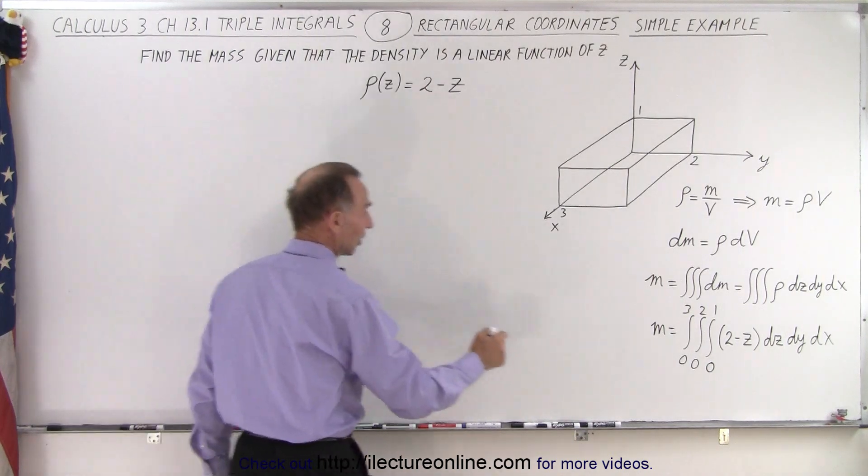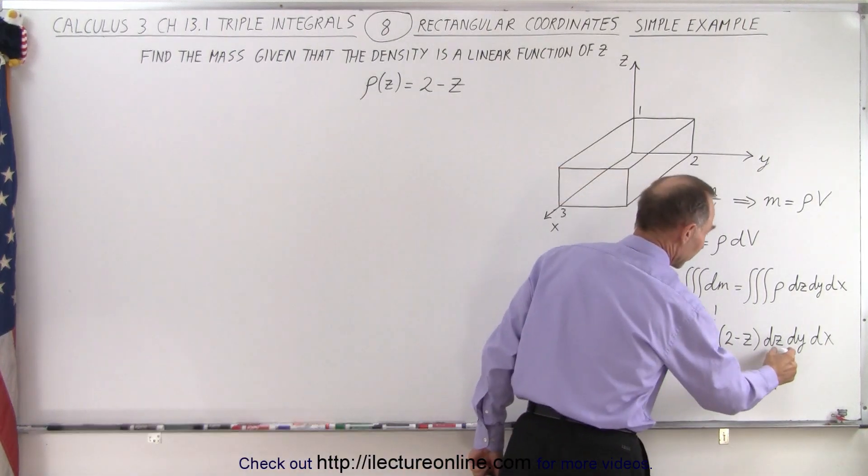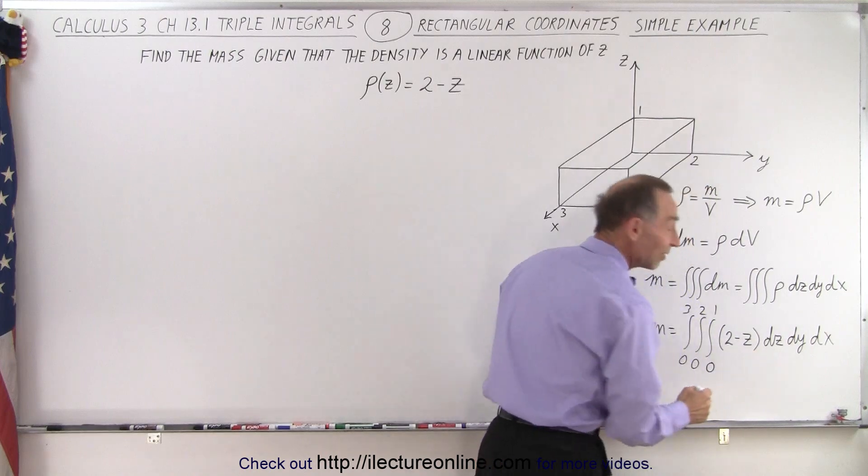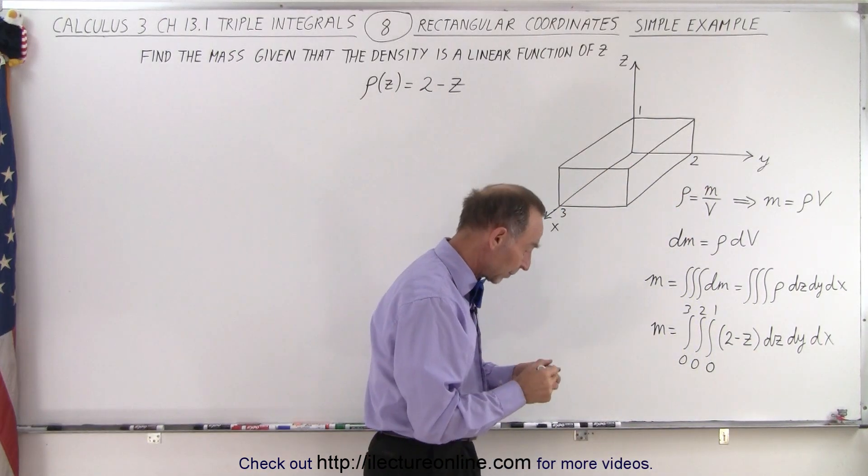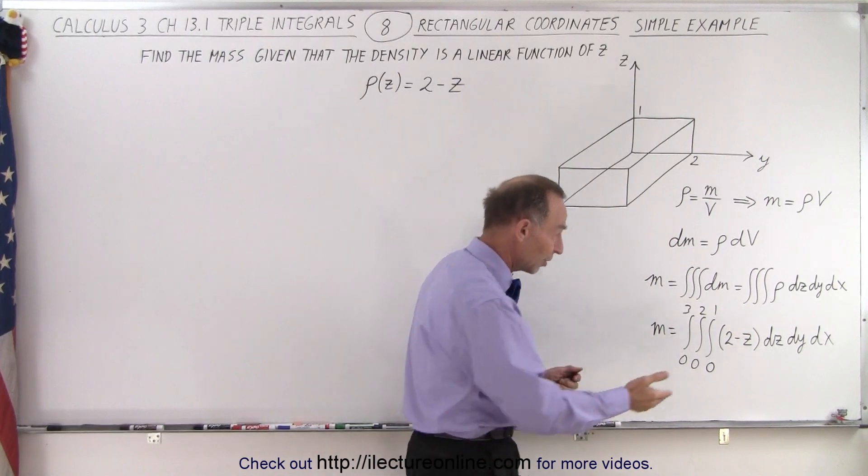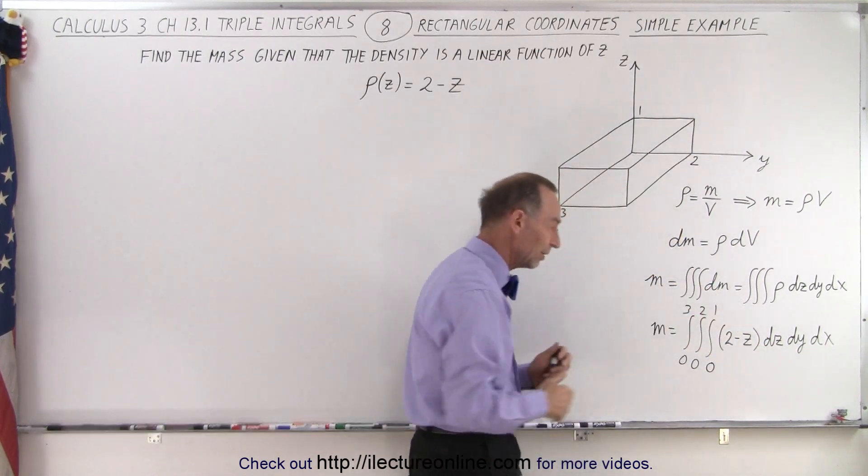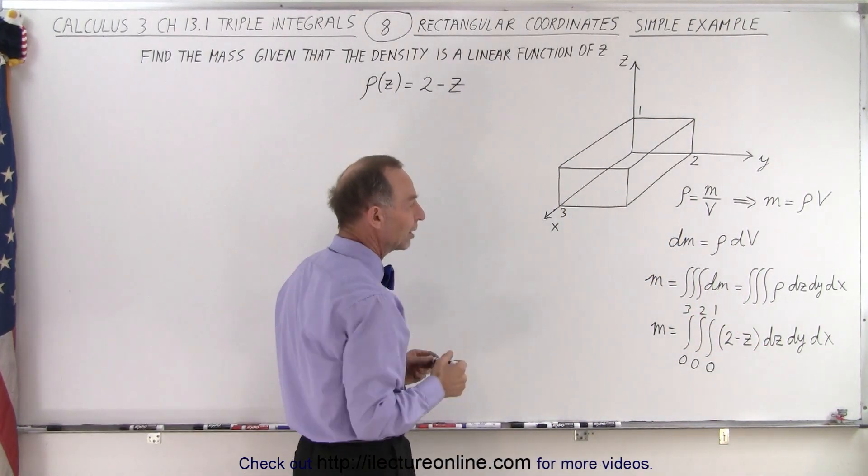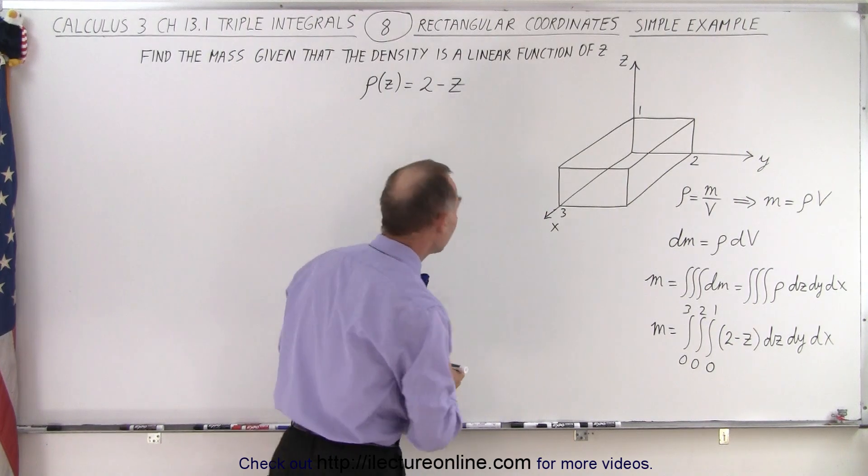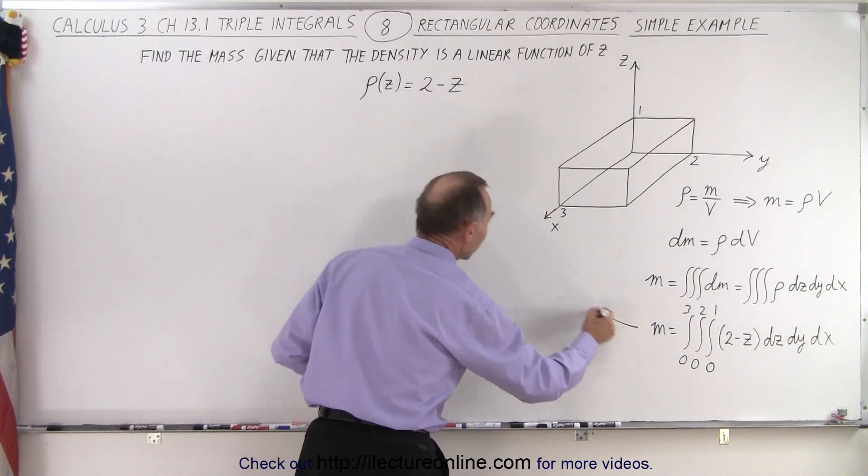All right, that means that the first integral we're going to do is over the variable z. And notice, typically we said we're going to keep the others constant, x and y constant, but there's no x and y in the function, so we don't even have to worry about it. We're simply going to integrate 2 minus z dz. And so that means that we end up with the following.